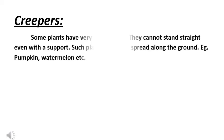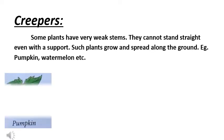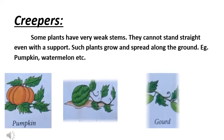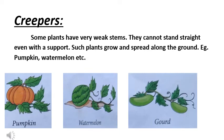Now, creepers. Some plants have very weak stems. They cannot stand straight. Such plants grow and spread along the ground. For example, pumpkin, watermelon, etc.